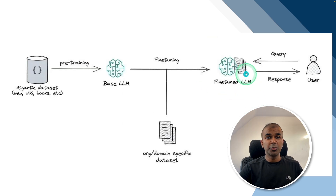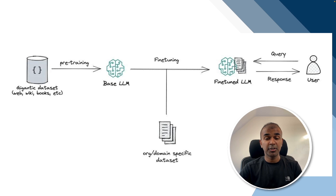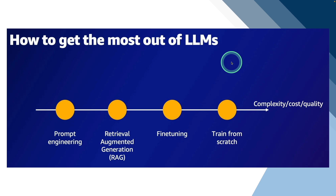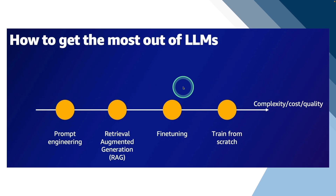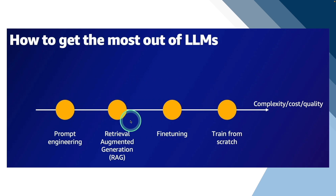For fine-tuning, you prepare or teach a model beforehand about organization or domain-specific data. When the user asks a question, it immediately responds with all the knowledge it learned. To get the most out of large language models, considering complexity, cost, and quality: the further right you go, the more complexity, cost, and quality increase. The easiest way to get a high-quality response is prompt engineering. Then RAG increases quality further, then fine-tuning, and finally training from scratch. But if we merge everything together, we can get the highest quality response.